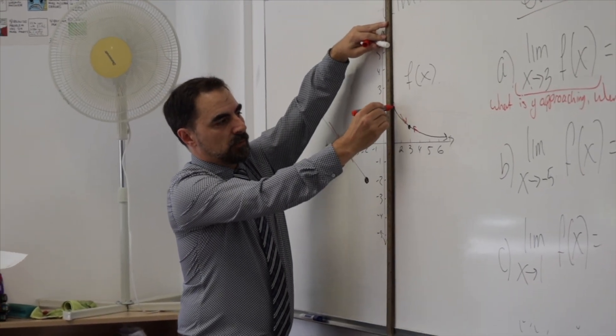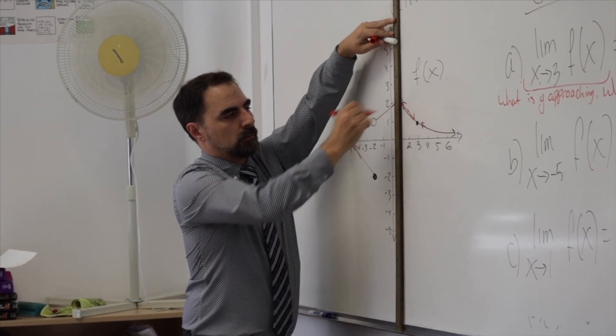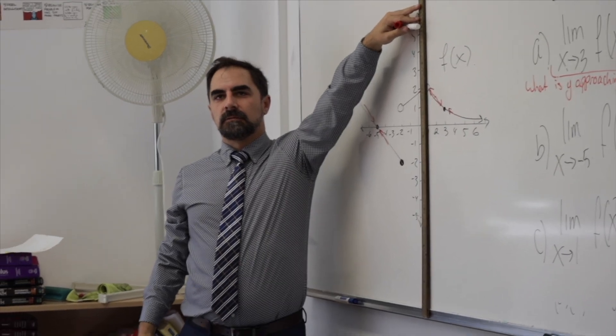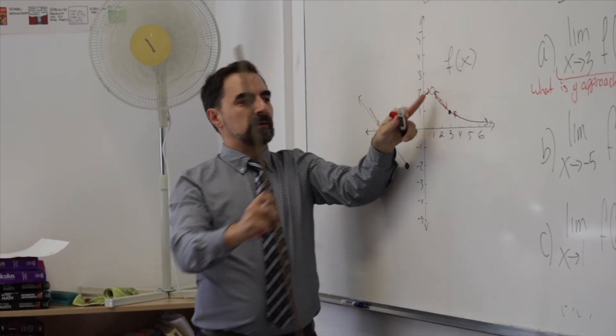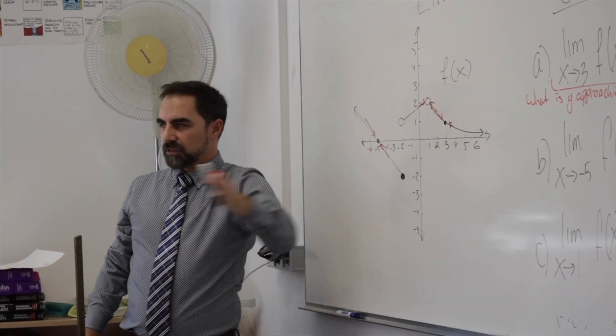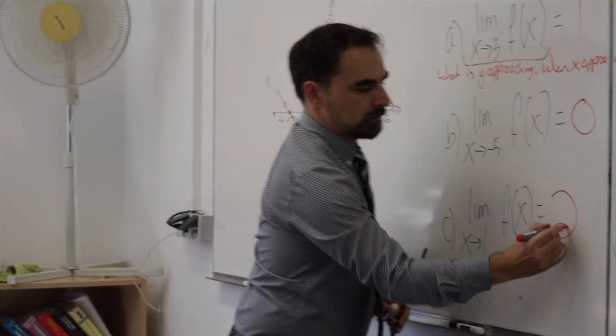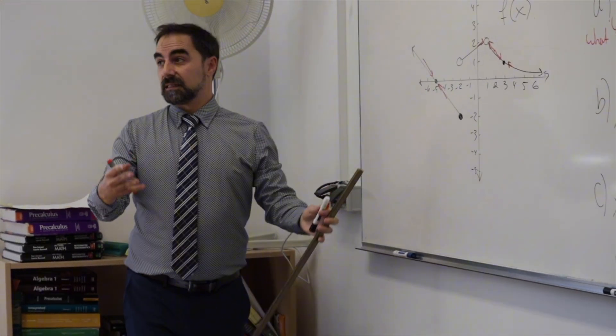Sophia, as our graph approaches one for X, what Y value is the graph getting close to? Two. Does it matter that we have a hole here? It doesn't matter that two is not in the domain? It's what the graph looks like it's approaching.